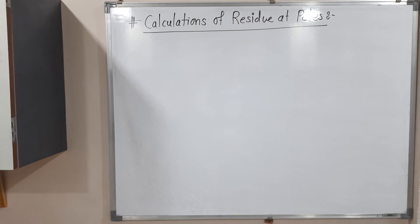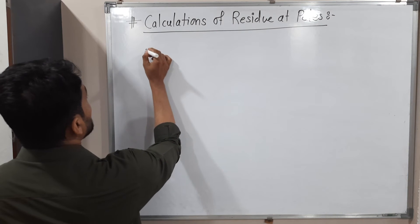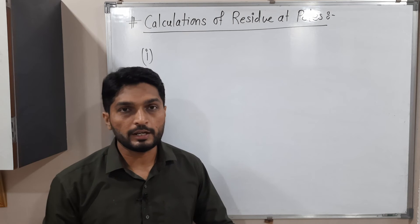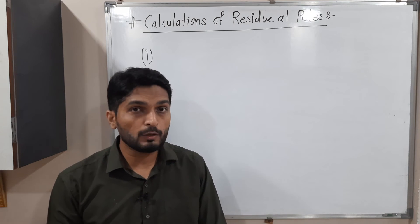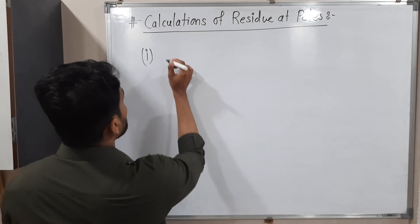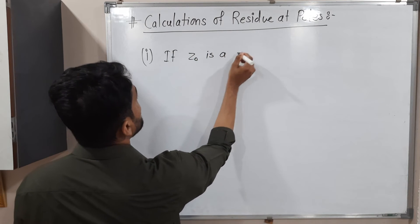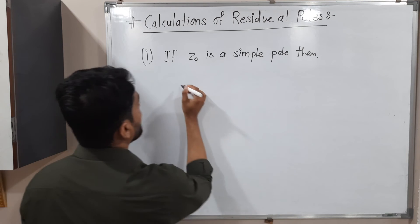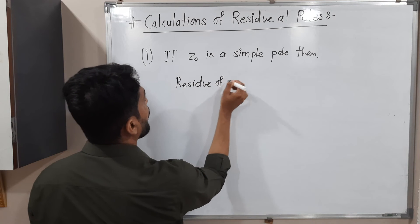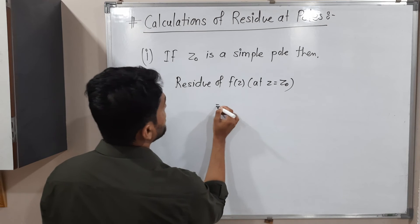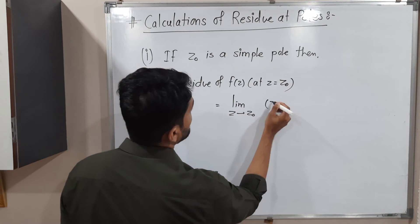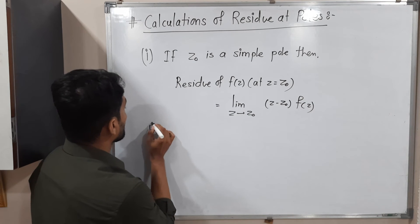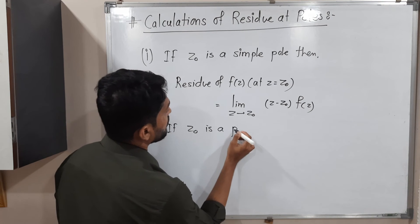Let us discuss the calculations of residues at poles. These formulas are applicable only if z naught is a pole; if it is an isolated essential singularity or any other kind of singularity, these formulas are not applicable. The first formula: if z naught is a simple pole — that is, a pole of order one — then the residue of f(z) at z equals z naught is: limit as z tends to z naught of (z minus z naught) times f(z).